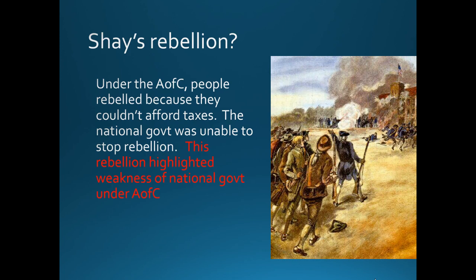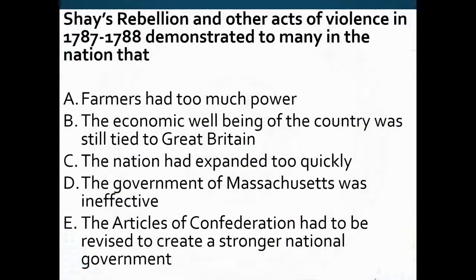Shays' Rebellion happened during the Articles of Confederation. It was a bunch of farmers that couldn't pay their debts or their taxes. There was a rebellion — lots of people were hurt and died — and the national government said we can't do anything: we can't raise an army, we just can't do anything. This event really showed people that we need a stronger national government, and that's when they all got together to write the Constitution — it was after Shays' Rebellion.